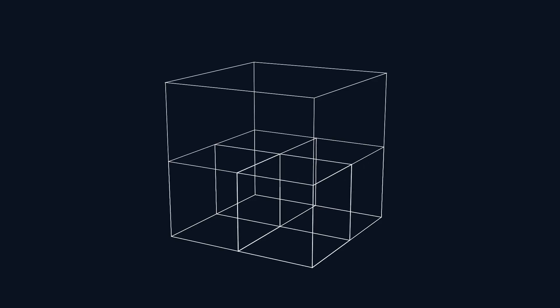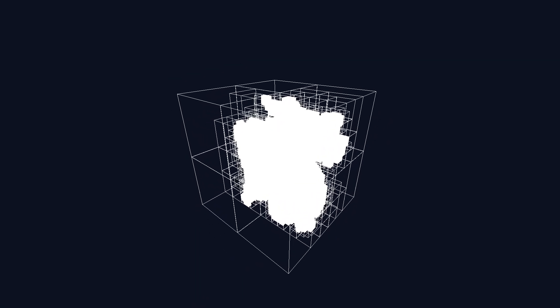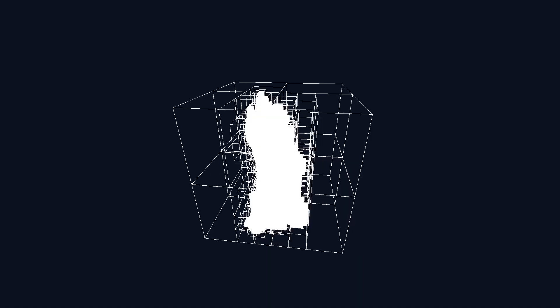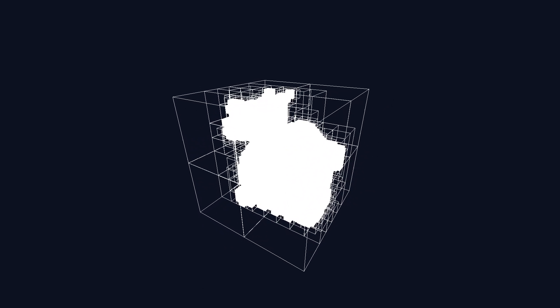That's where SVOs come in. The idea behind an SVO is that we only store voxels that we need. Instead of filling up every single voxel in a 3D space, we only create voxels where there's actually something to render.